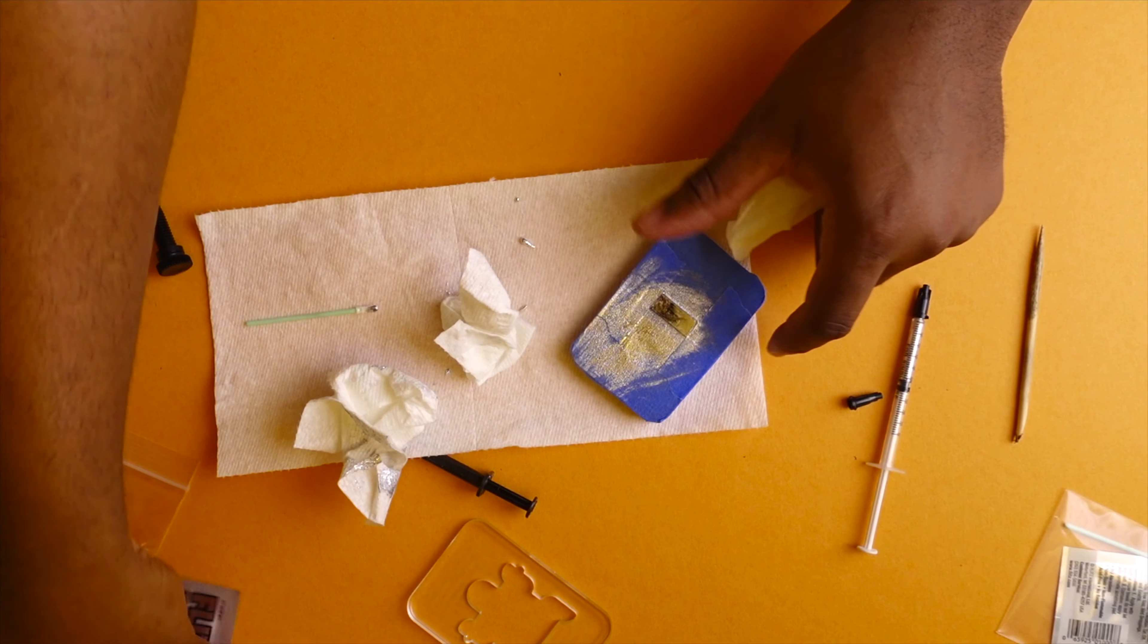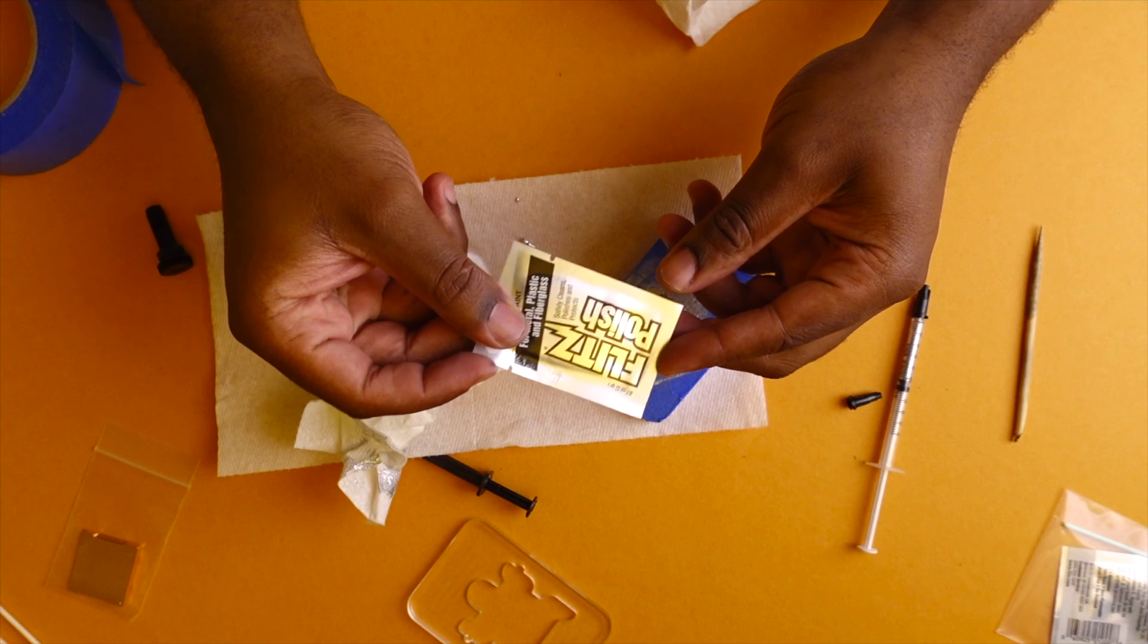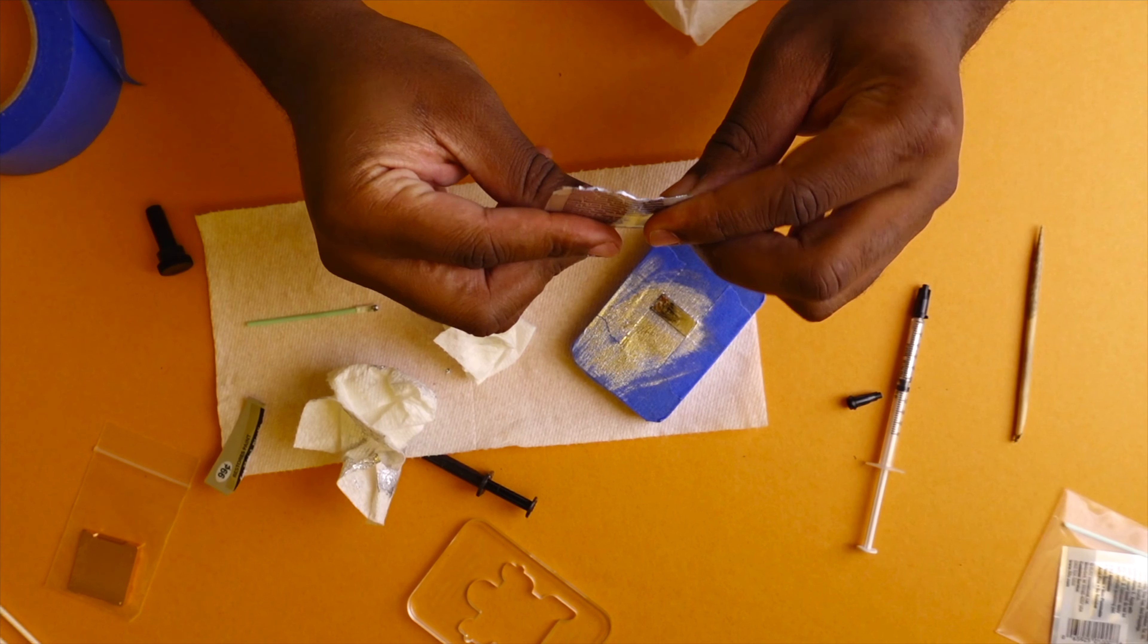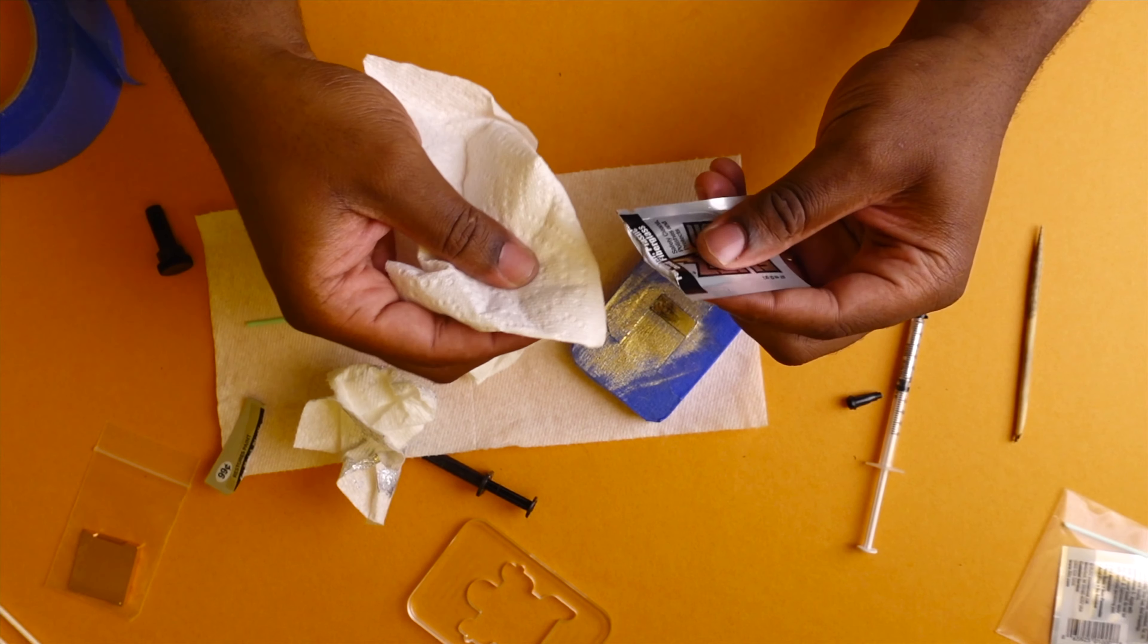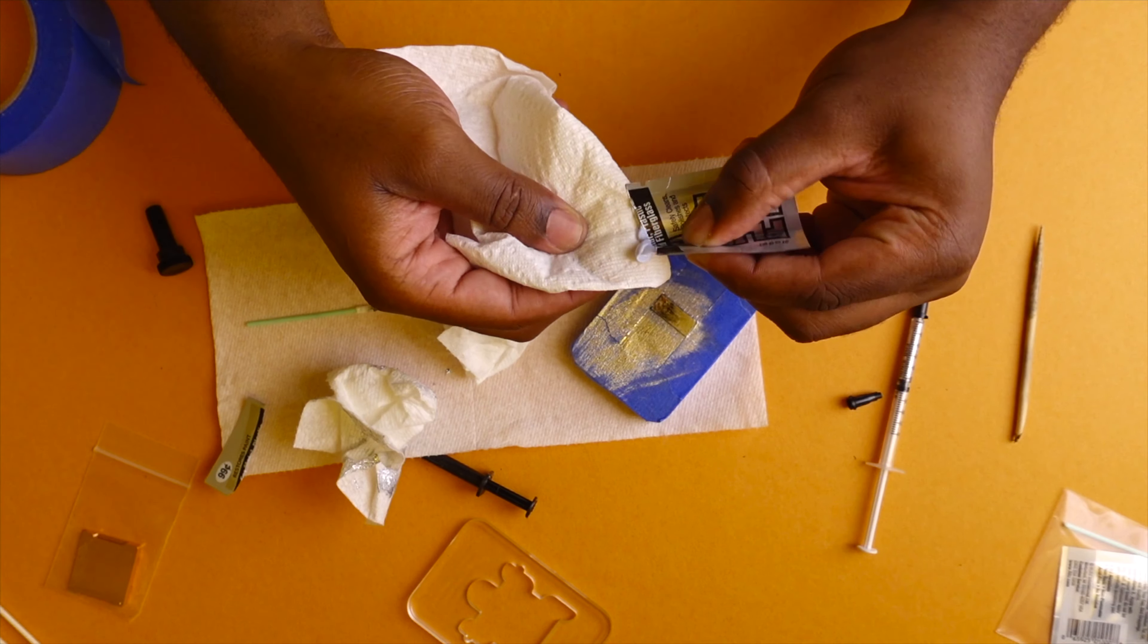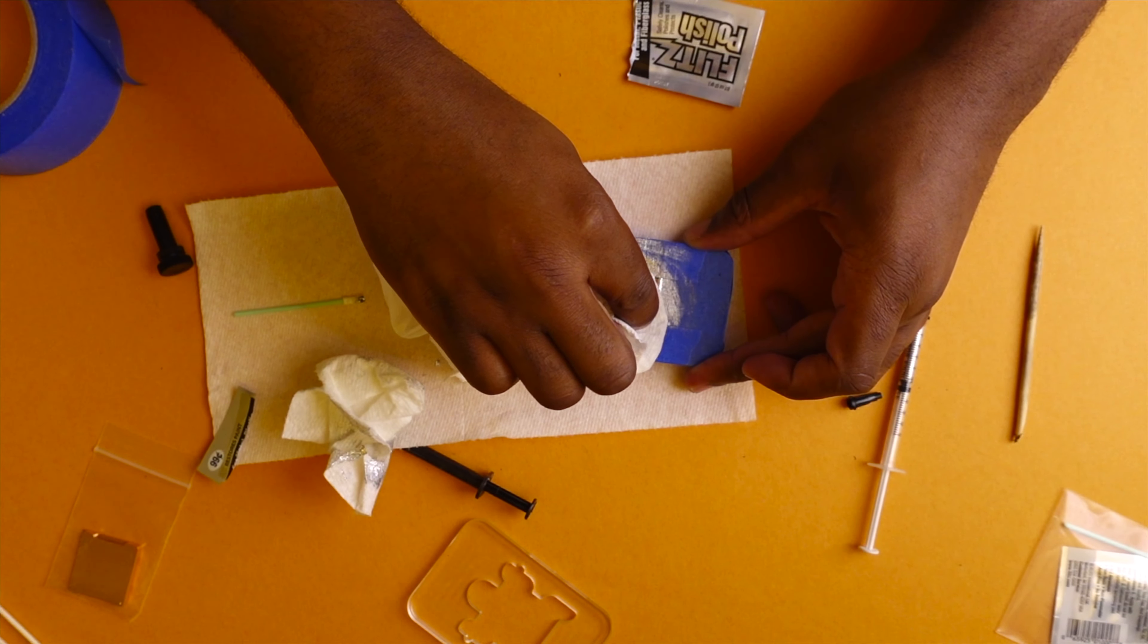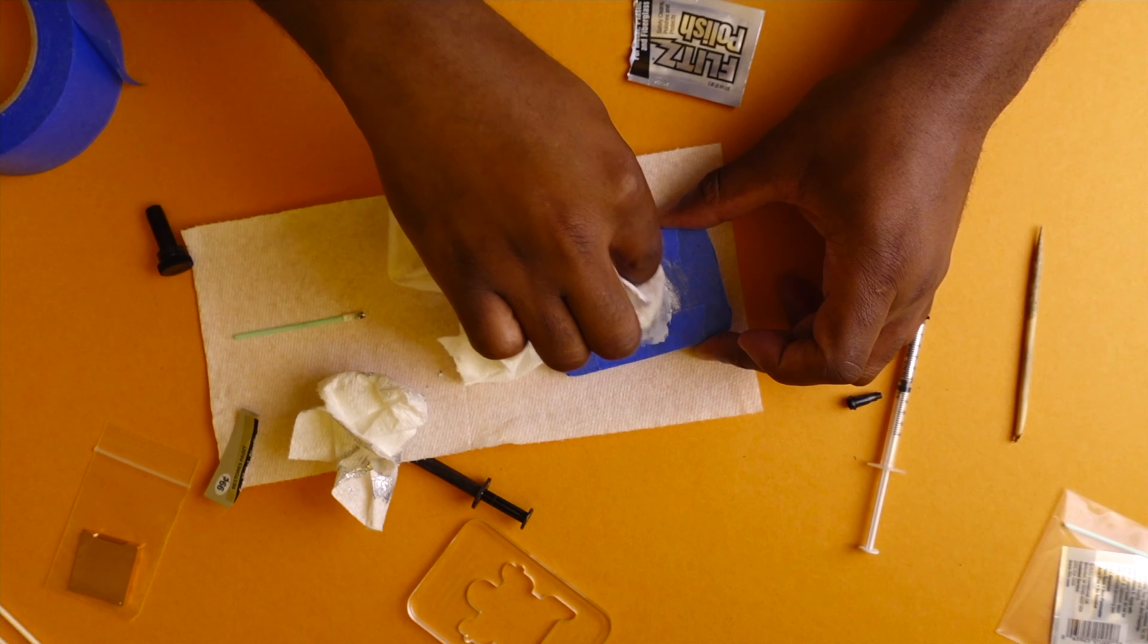But once you kind of have it at this state, then what you're going to be doing is you're going to need a piece of paper towel and your Flitz polish. And now we're going to actually clean the CPU and make sure that the die is nice and clean and it is nice and shiny. So you're just going to take some and squeeze it on a paper towel like so, just going to clump it on just like that, and you are going to get to polishing.